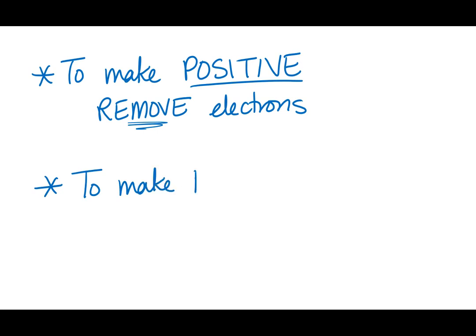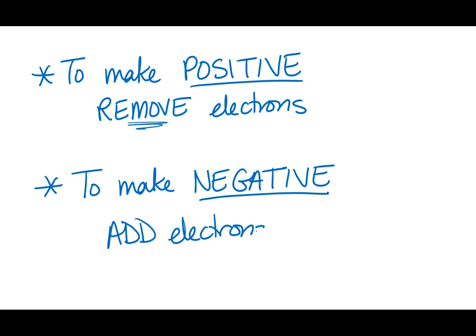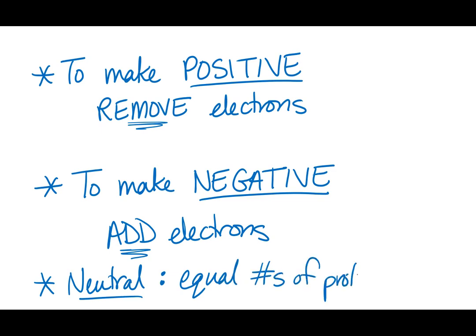To make something negative, you need to add electrons. There needs to be extra electrons, excess electrons in an object. The only way to do that, we can't get rid of protons, so we need to add electrons. For something to be neutral, there are equal numbers of protons and electrons. For every proton, there is one electron, if it is neutral.